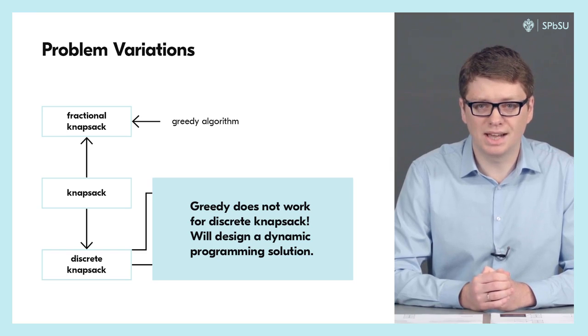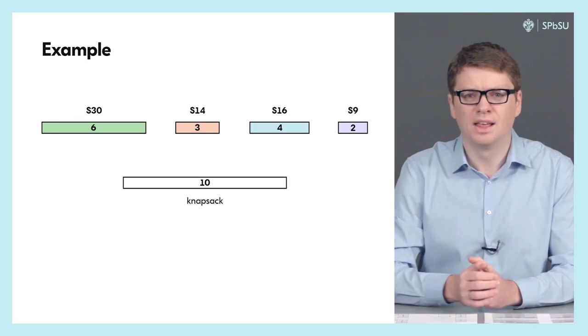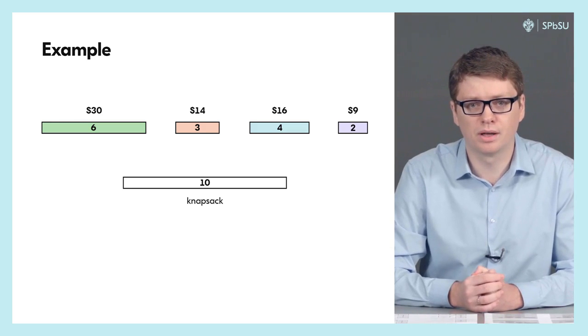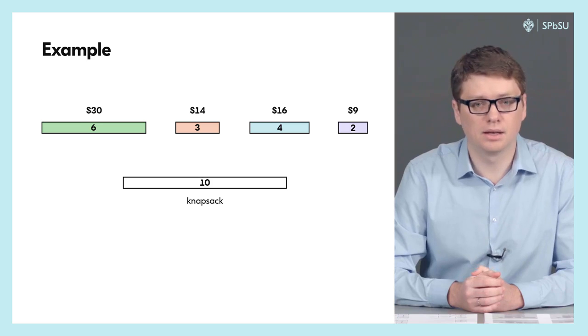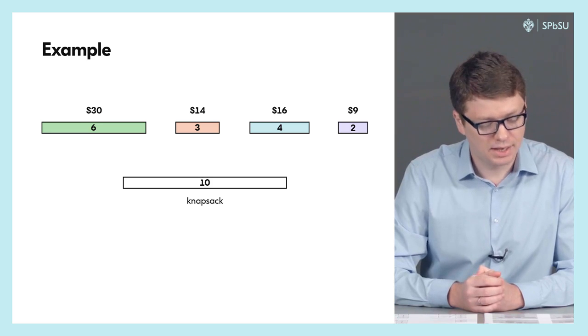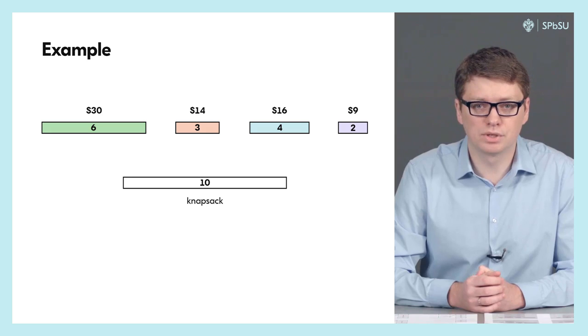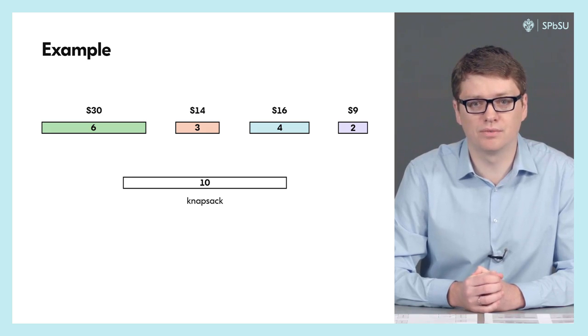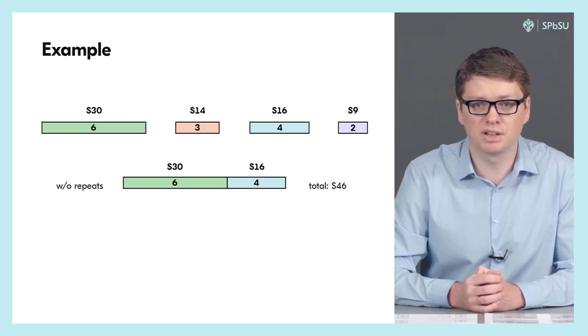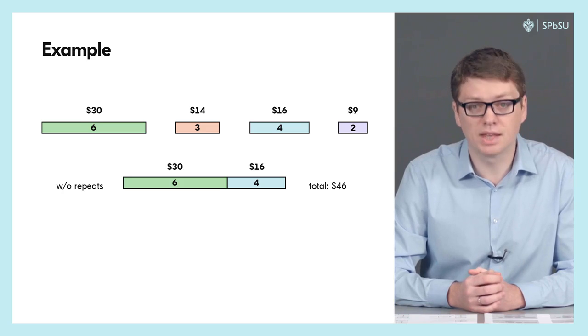Instead we will design a dynamic programming solution together. Before going into the details, let's consider an example. Consider a bag of total capacity 10 and assume that we have four items with weights 6, 3, 4 and 2 and with values 30, 14, 16 and 9 respectively. For the discrete version without repetitions, the optimal value is equal to 46. To achieve this, it is enough to take the first item and the third item.